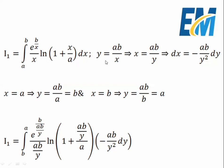Let's change the variable of integration. We will take y = ab/x, so xy = ab, then x = ab/y. Then dx will be the derivative of this term multiplied by dy, which is minus 1 over y squared times dy. So dx equals minus ab over y squared dy.